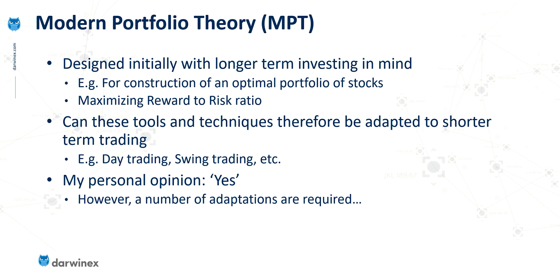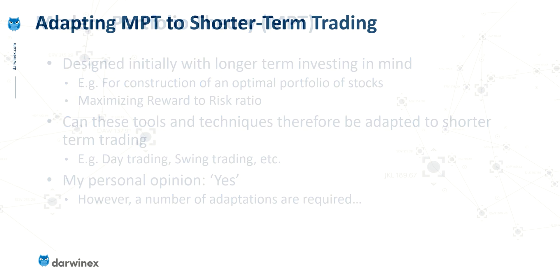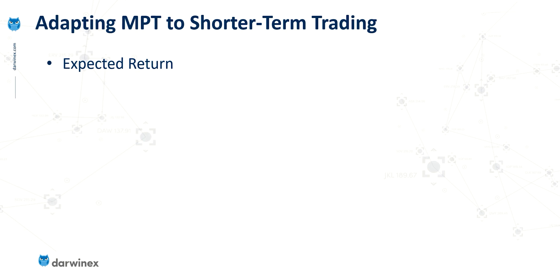In this and the next four episodes, I'm going to be taking a look at what those adaptations are. The first is the calculation of the expected return. In standard portfolio theory, this uses an average of return over a certain period in the past. But that assumes that you're going to be holding the asset for a long period of time, and in much shorter term trading, that isn't the case. So there's an important adaptation required here, which I'll be covering in detail as part of this episode.